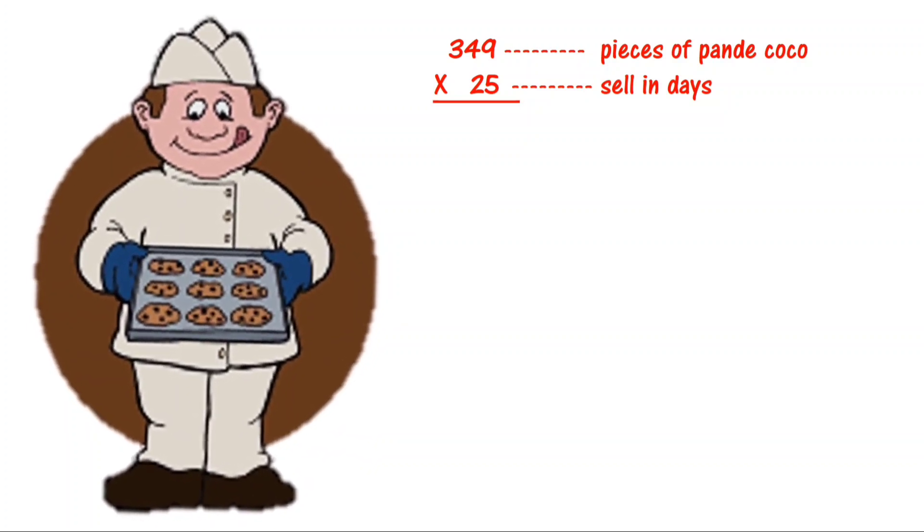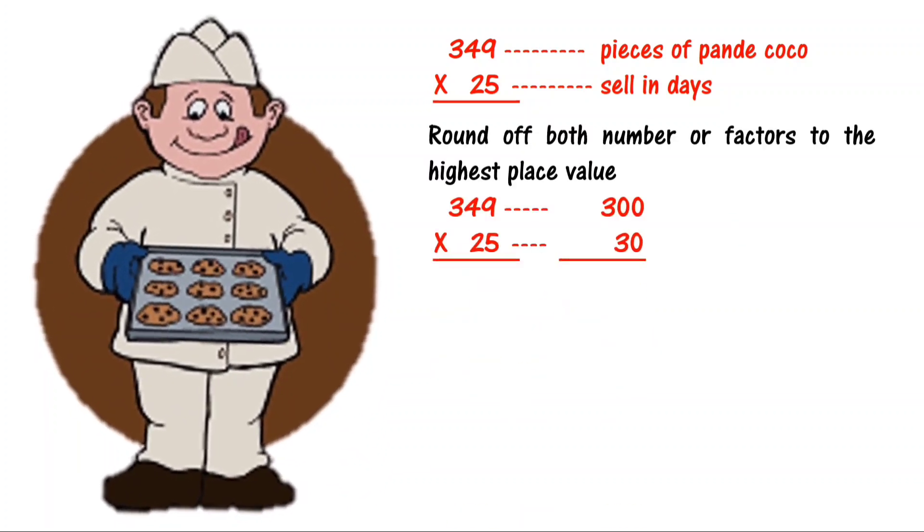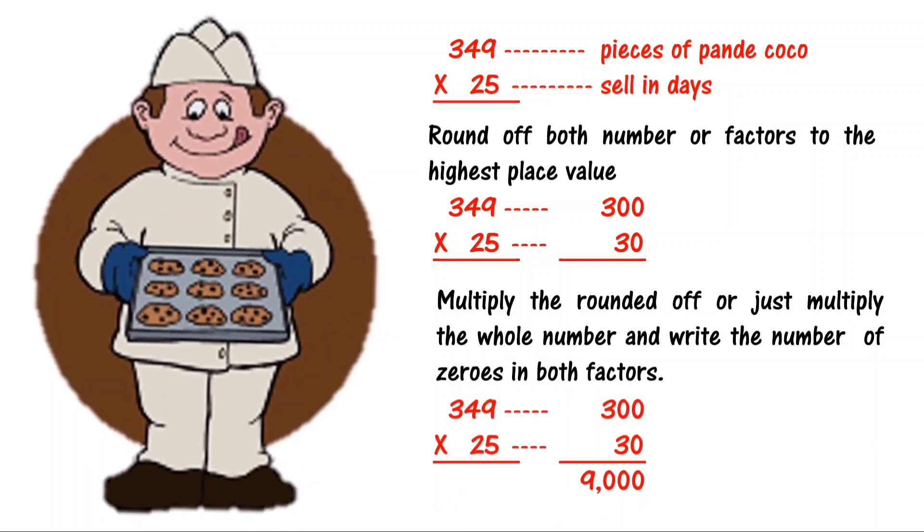349 pieces of pande coco times 25 days. 349 rounds up to 300 and 25 is rounded up to 30. 300 times 30 is 9,000.